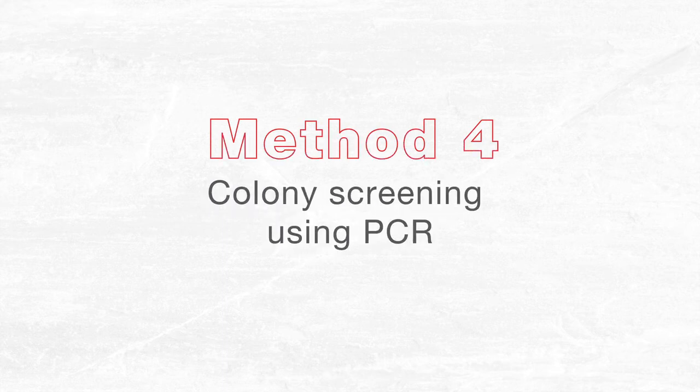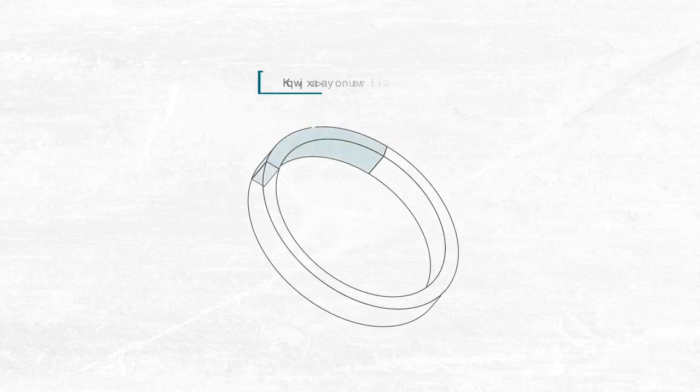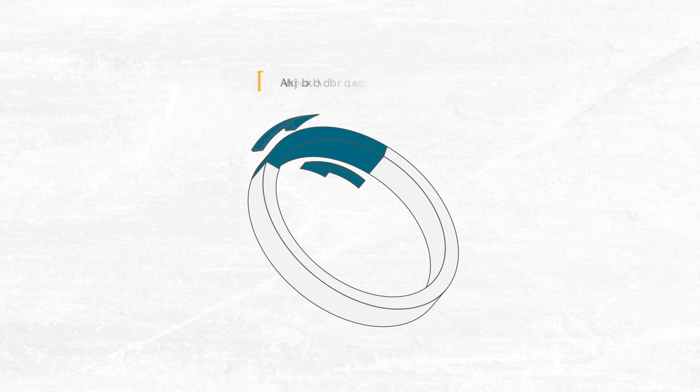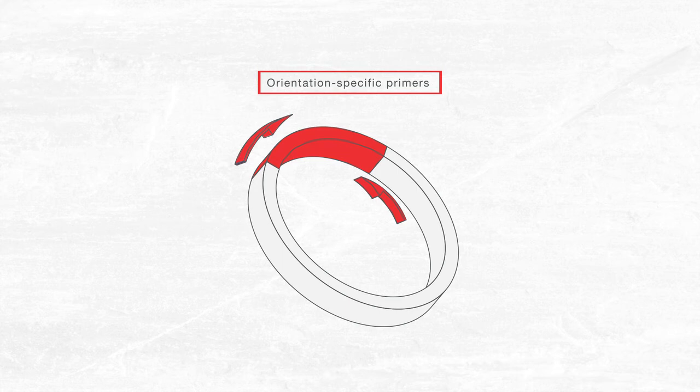Method four, a quick way. Use PCR on individual colonies to check for the correct insert. Don't forget to use vector and insert specific primers.